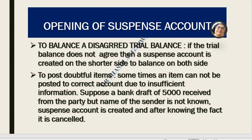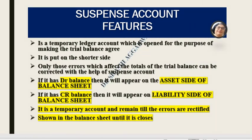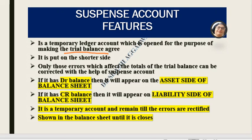Suspense account is also opened for doubtful or uncertain items where we don't have sufficient information. For example, if we receive a bank draft from a party but the party's name is not known, we credit the suspense account. When the fact is confirmed, we cancel it. The suspense account is a temporary account — it is opened so that our trial balance matches, and the balance is always placed on the shorter side.